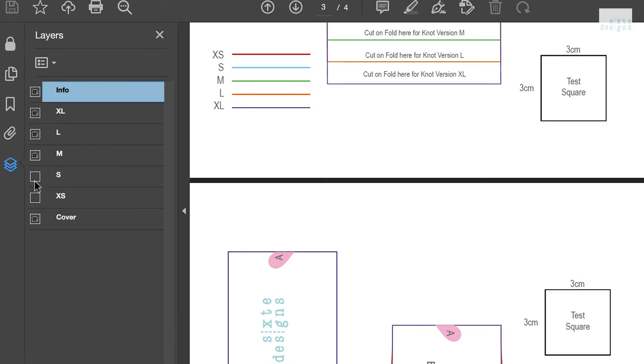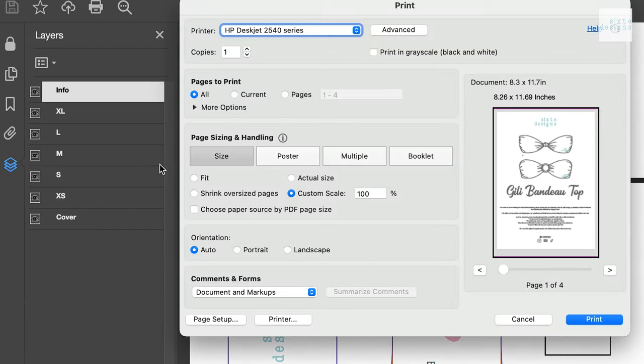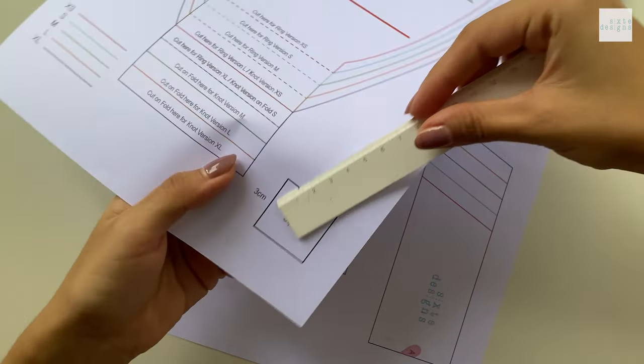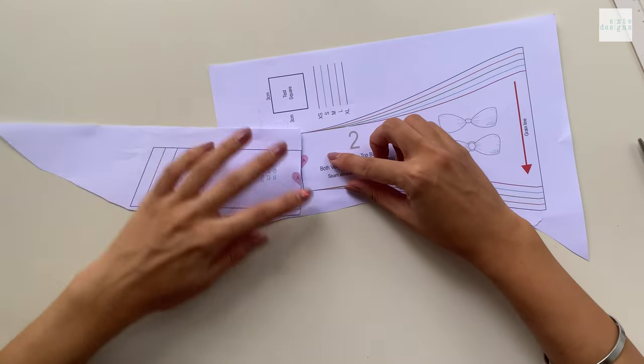So you're going to print your paper patterns out and the great thing about this pattern is that the sizes are layered so you can isolate the size that you want. Just make sure that when you are printing, you're printing at 100% and double check that the test square measurements match before you cut it out in your desired size.